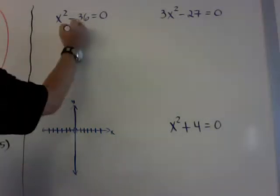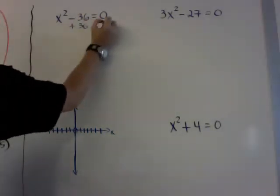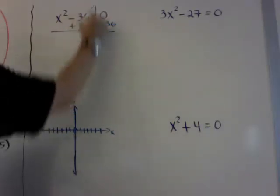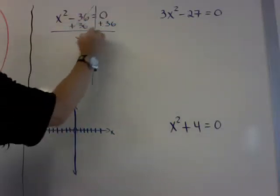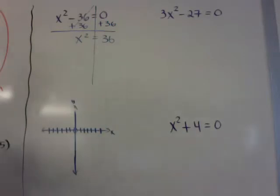Move the 36 over, like we do on a normal equation, cross that out, and I get x² = 36.